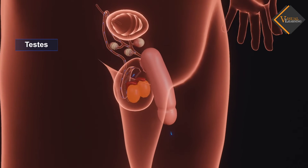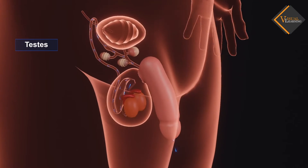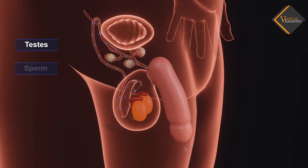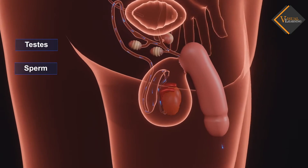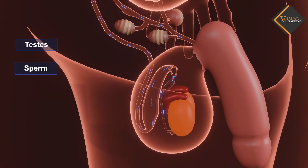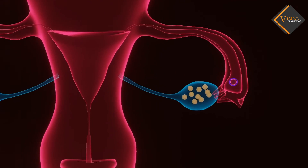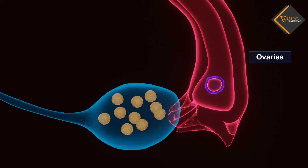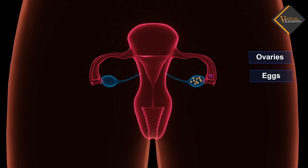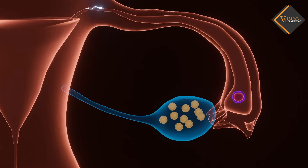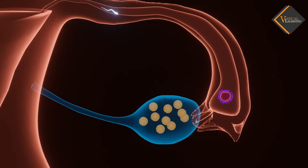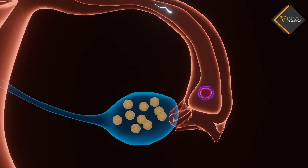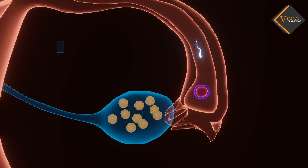The testes in males are responsible for the production of sperm, and the ovaries in females are responsible for the production of eggs. The sperm fuses with the egg during fertilization, which results in the formation of a zygote that gets implanted in the wall of the uterus.